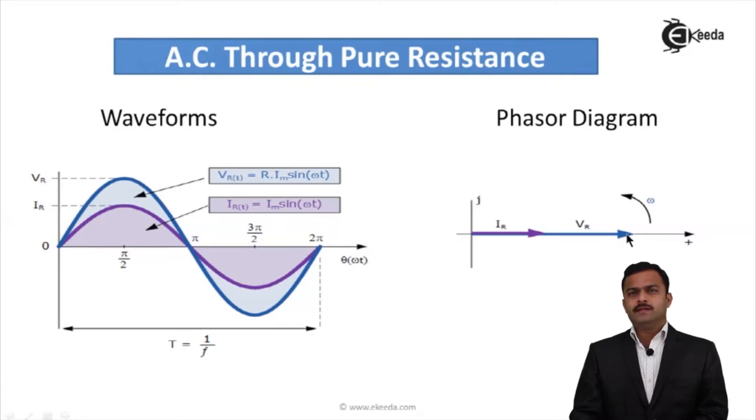When I draw the phasor diagram, V is the reference because we considered the phase as zero, so it is along the positive x-axis. Current Im sin(ωt) also has phase angle zero, so it is also along the positive x-axis. Both phasors are in line, so V and I are both in phase for a resistive circuit.